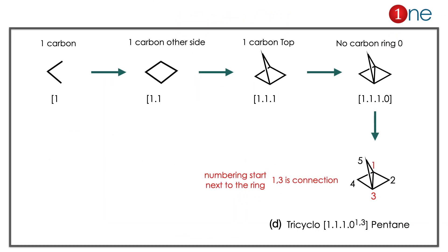The answer is tricyclo[1.1.0]1,3-pentane. Drawing step by step: the first carbon bridge is 1, the second is 1, then the bridged carbon is 1 — so 1,1,1. Then there is a connection with no carbon, so it is 0. Numbering starts next to the main ring: 1, 2, 3 — so the connection is a 1,3 connection shown as a superscript. The answer is D: tricyclo[1.1.0^{1,3}]pentane. The naming always starts from the high number of carbons to low.